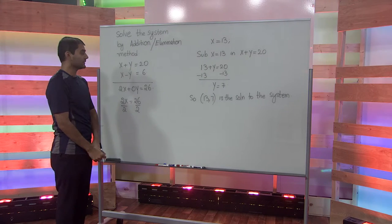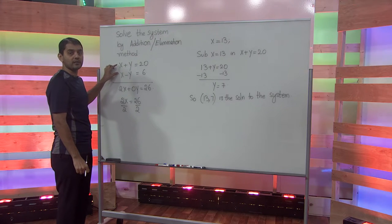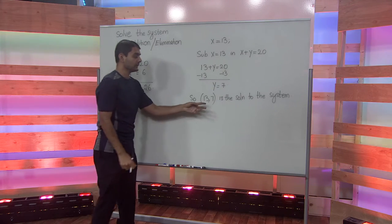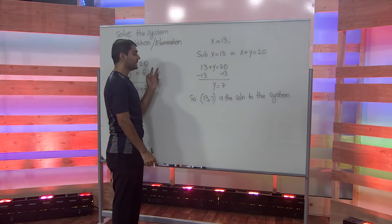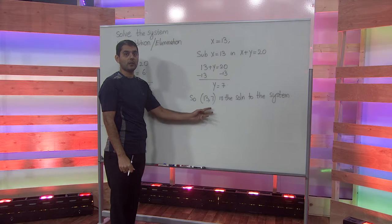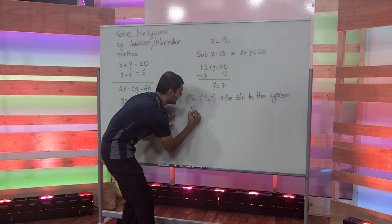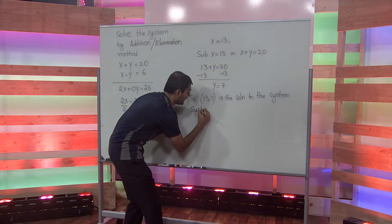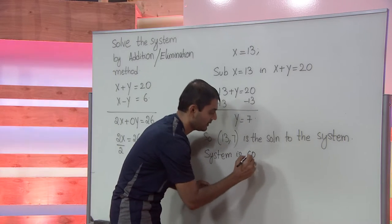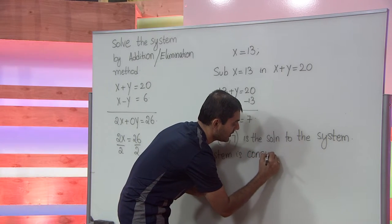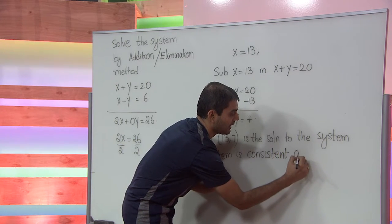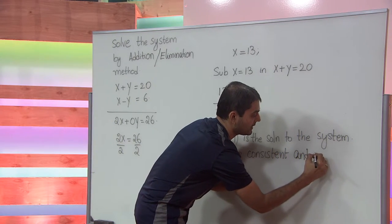This system represents two intersecting lines. These two lines intersect at the point x equals 13 and y equals 7. Hence, the system is consistent and independent.